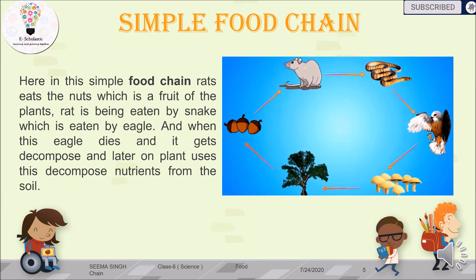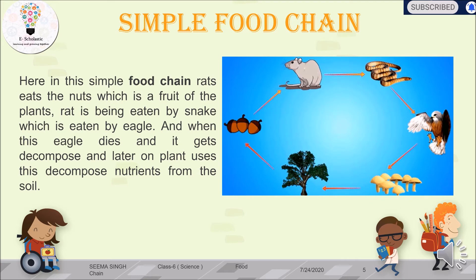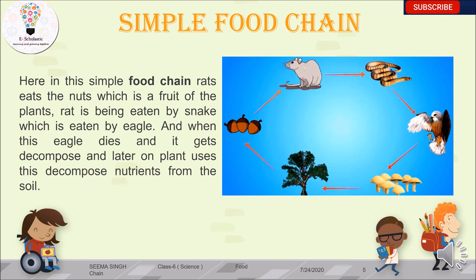Here is another example of a simple food chain: a rat eats a nut from a tree or plant; the rat is then eaten by a snake; the snake is eaten by an eagle. When the eagle dies, it is decomposed by decomposers — fungi and bacteria present in the soil — which break down the dead body into nutrients. These nutrients are then used by the plant for food preparation. This is the cycle of the food chain running in our ecosystem, balancing the intake and passing of energy and nutrients from one level to another.